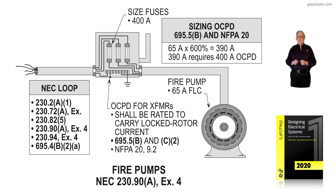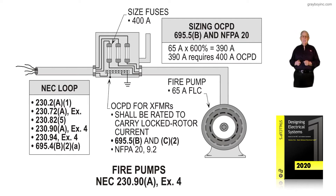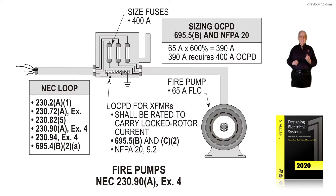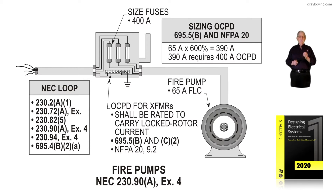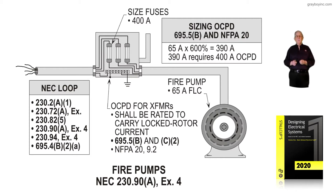This illustration deals with fire pumps, applying exception 4 to 230.90A. The overcurrent device to a fire pump has to be sized to a value that will allow the fire pump to operate to a failure. We're applying 695.5B, which deals with fire pumps, and using 600%. 600% of 65 would be 390, and we're applying exception 1 to 430.52C for fire pumps, so we will have an overcurrent device to allow the fire pump to operate to a failure.